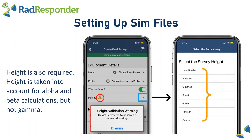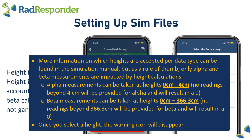Toggle your window open, and note that height is also required. Height is taken into account for alpha and beta measurements, but not for gamma, so you'll need to select your height. We have pre-determined survey height options: one centimeter, three inches, six inches, three feet, six feet, one meter, and a custom survey height. Alpha measurements can be taken at heights zero to four centimeters. Beta measurements can be taken at heights zero to about 366 centimeters. For gamma, height is not currently used to determine your simulated value.